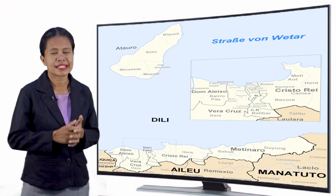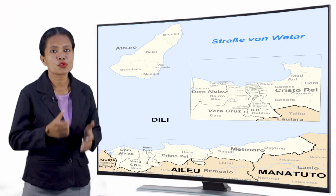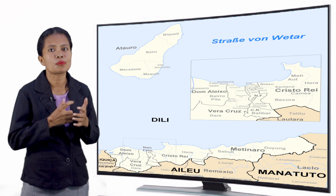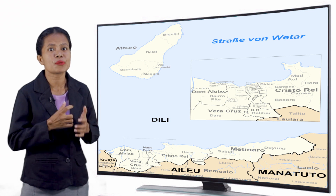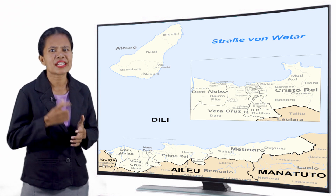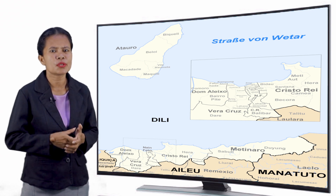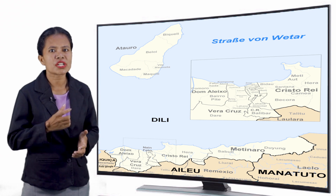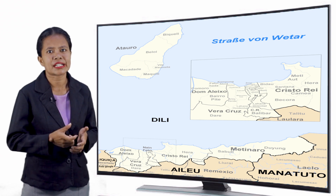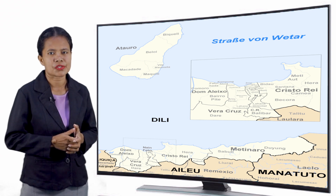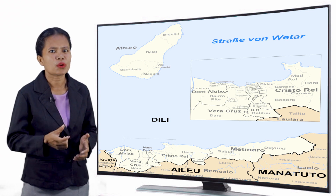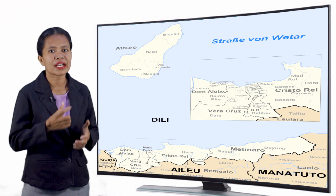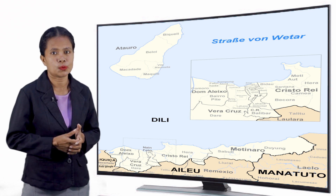Os postos administrativos que apresentam maiores valores demográficos são os que se encontram no município de Dili, sobretudo os que englobam a cidade capital do país. A menor divisão administrativa do Timor-Leste é o suco, que pode ser composto por uma ou várias aldeias.